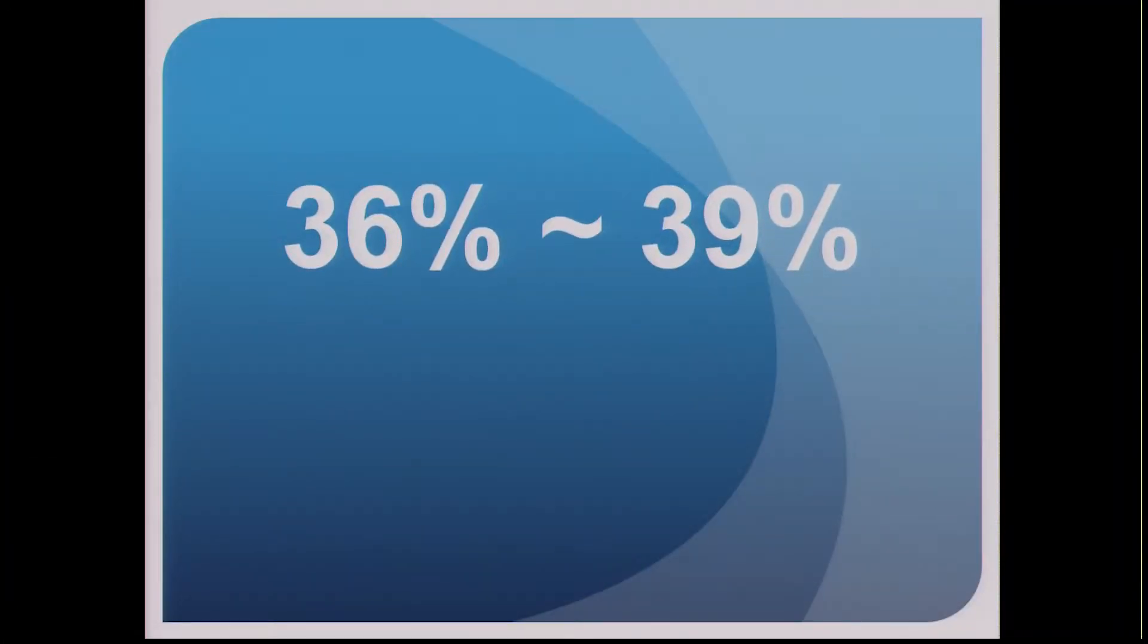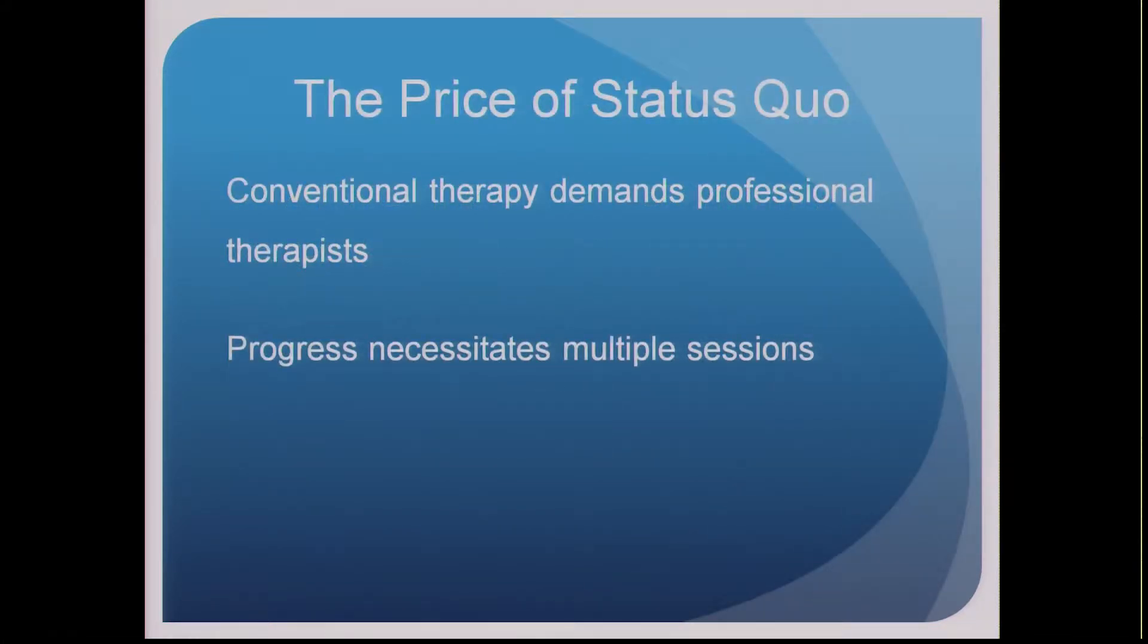So according to the Bureau of Labor Statistics, the physical therapy job market is expected to expand by approximately 36 to 39 percent within the next decade. Meanwhile, the national occupation growth rate is a wee 11 percent. At the same time, conventional therapy demands the presence of a physical therapist to supervise the patient's motions and to assess his or her progress.